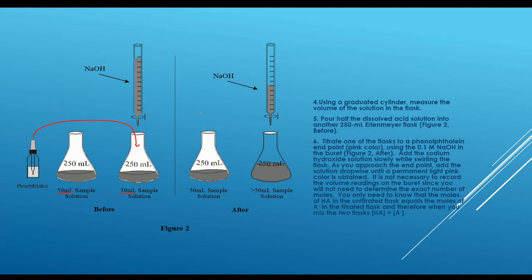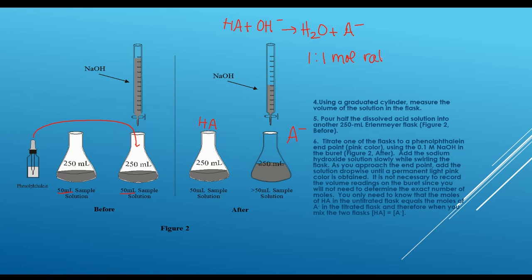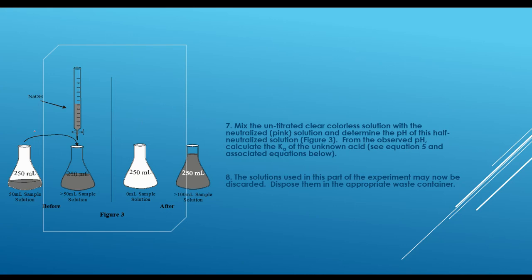We'll have one flask that has HA in it, and then the other flask after titration — let's think about what's in there. HA reacts with OH⁻ to make water and A⁻, and A⁻ is the conjugate base of HA. So in the titrated flask we just have A⁻. Since it's a one-to-one mole ratio, the moles of HA in the untitrated flask equal the moles of A⁻ in the titrated one.